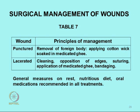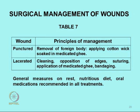Wounds were one of the commonest conditions surgeons had to deal with. Then we come to piles — a very common condition. There are six types described and the anatomy is fairly well described. We are focusing only on surgical procedures. There were three ways of treating piles: the use of caustics, the use of cauterization, and surgery — excision. These were the three methods.